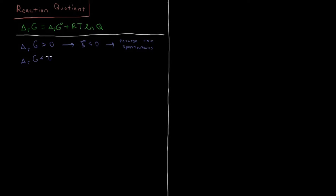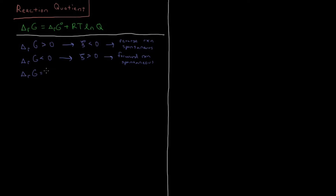Similarly, if the Gibbs energy is less than zero, we know that reactions with a Gibbs energy less than zero are spontaneous. So when the Gibbs energy of reaction is less than zero, the extent of reaction will be greater than zero, and the forward reaction will be spontaneous — it will occur on its own without any external input. The condition for equilibrium is when the Gibbs energy of reaction equals zero.